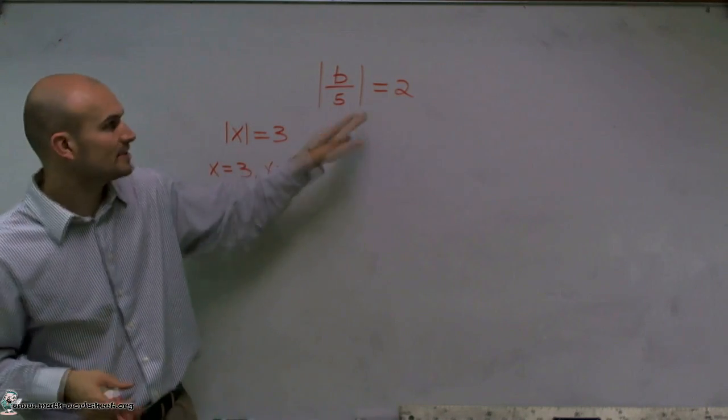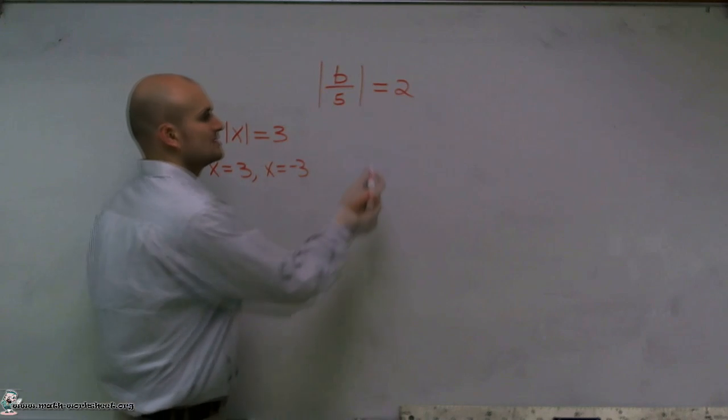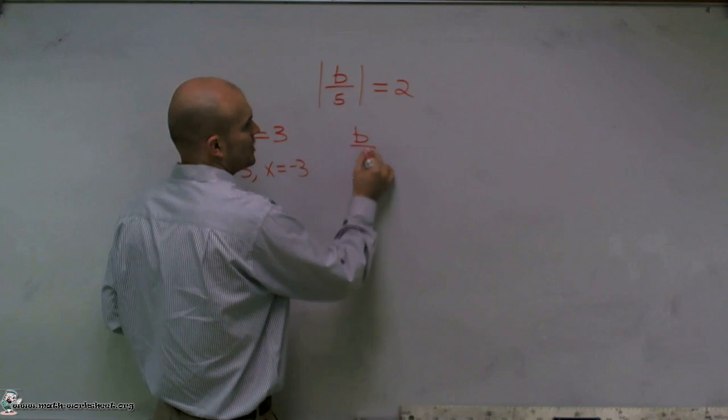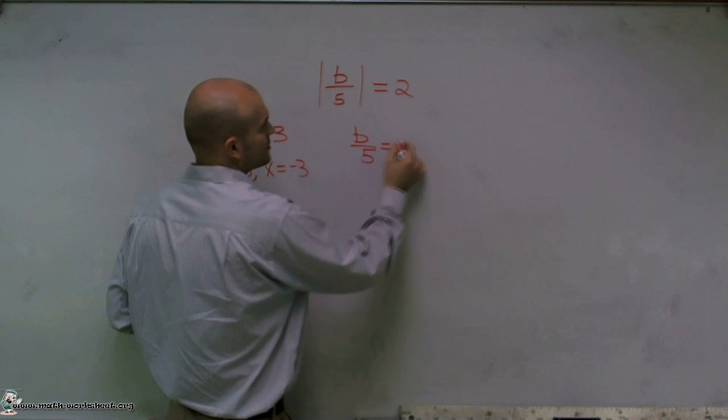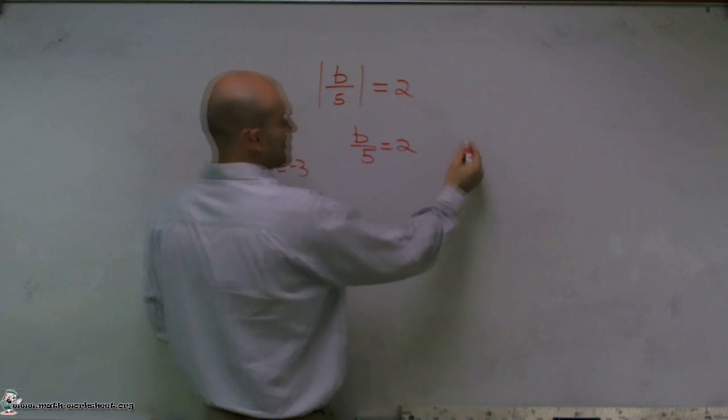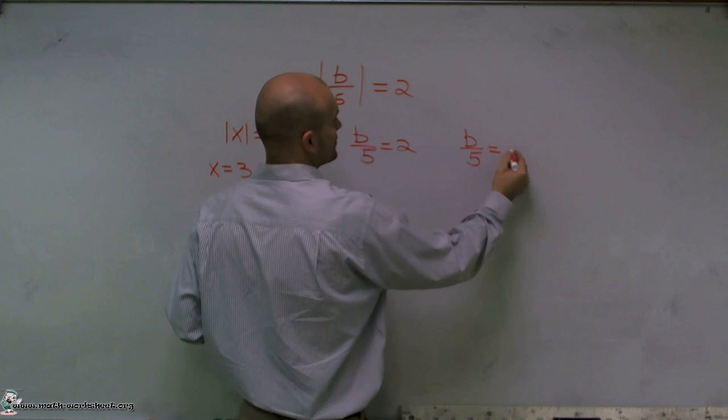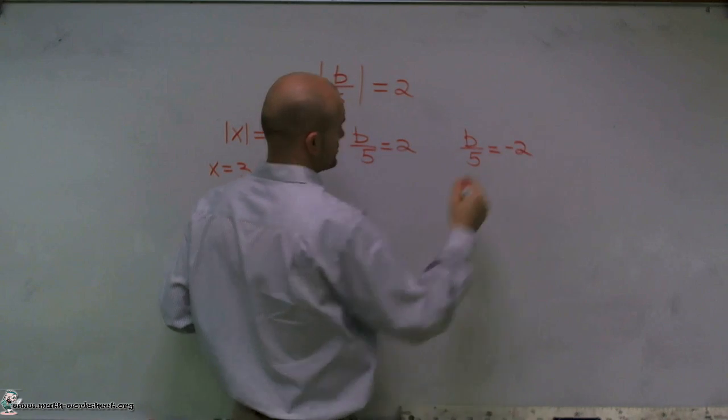So what I'm going to do is I'm going to set this problem into two separate cases. I'm going to write this as b over 5 equals the positive value of 2 and b divided by 5 equals the negative value of 2.